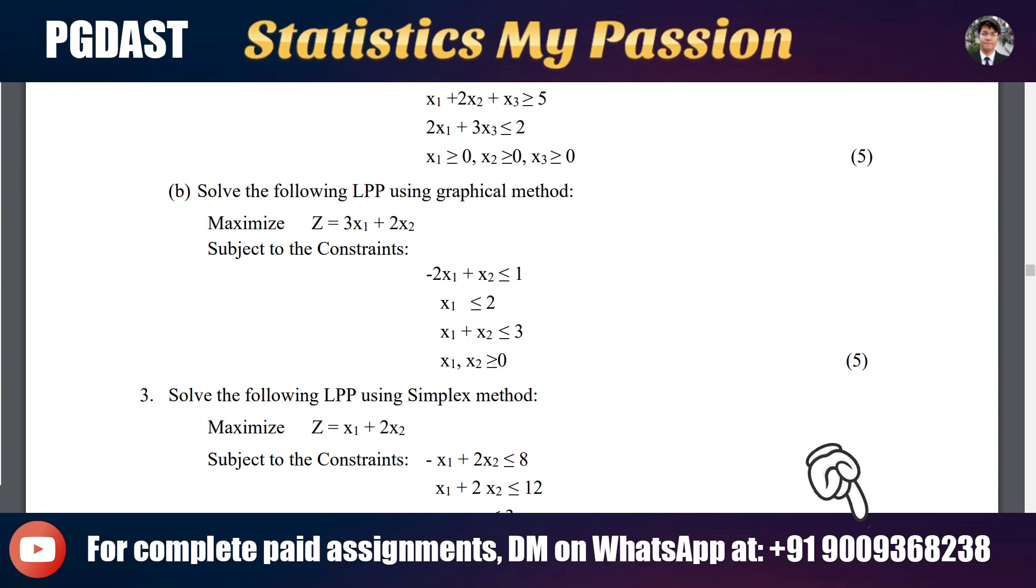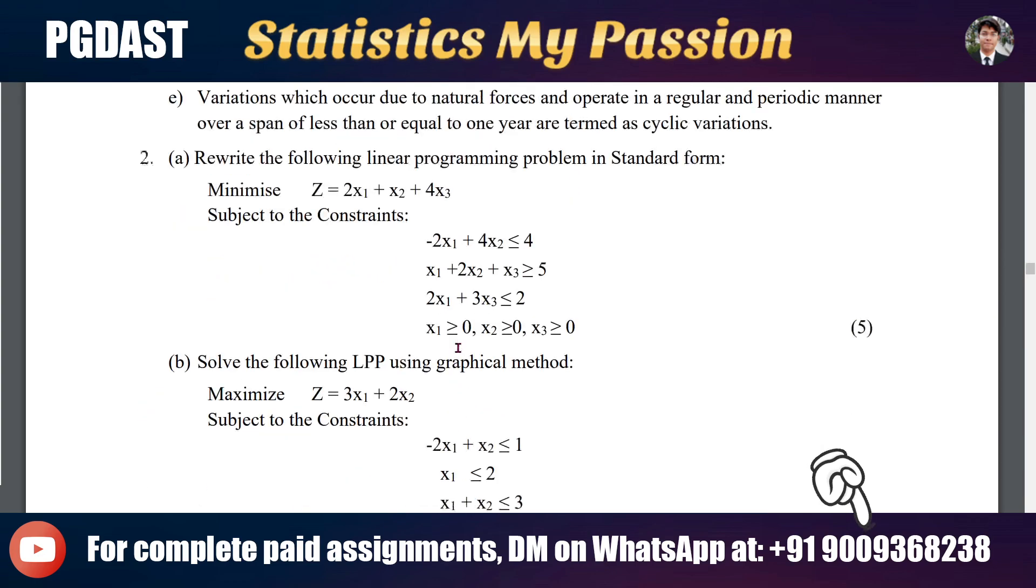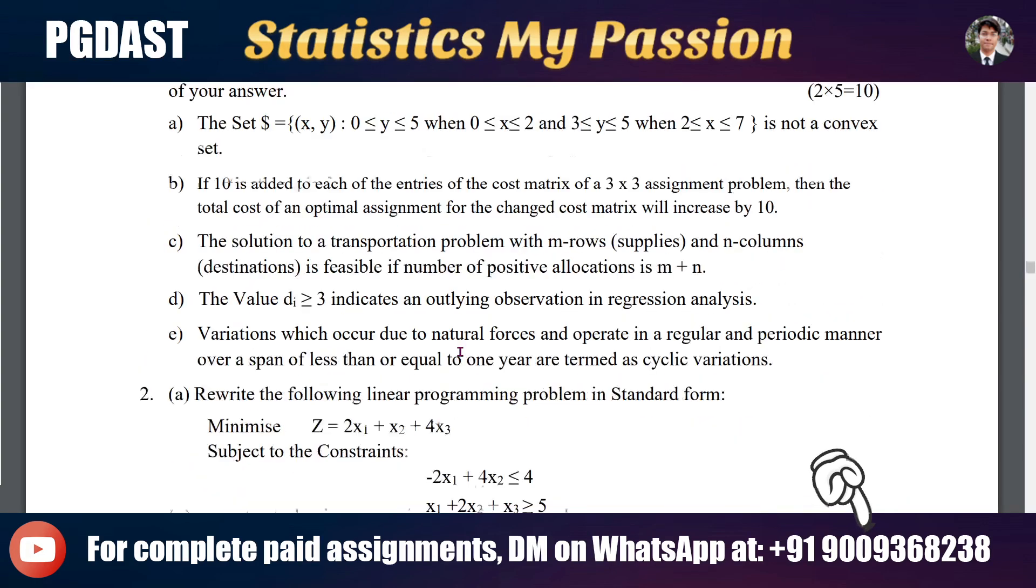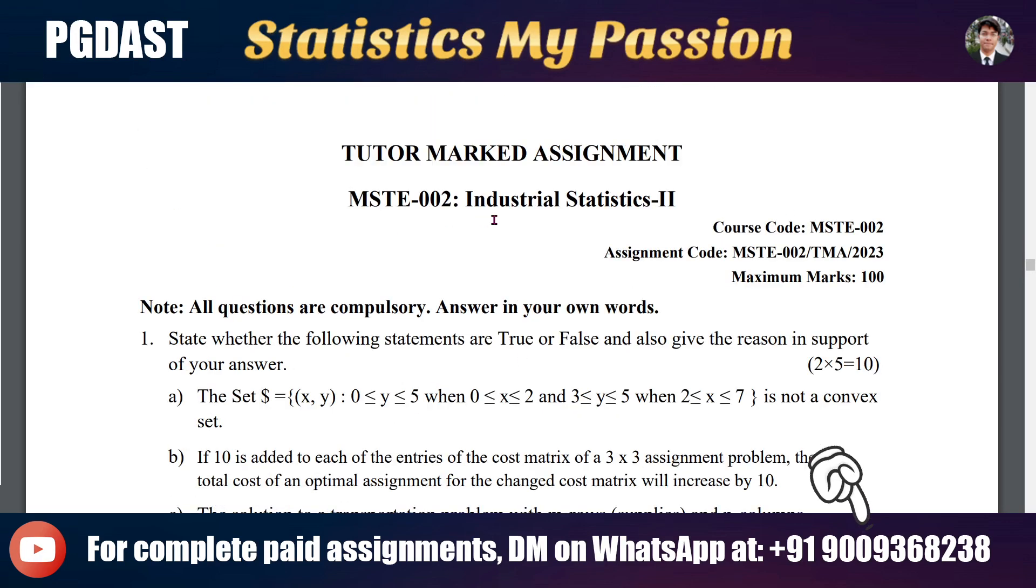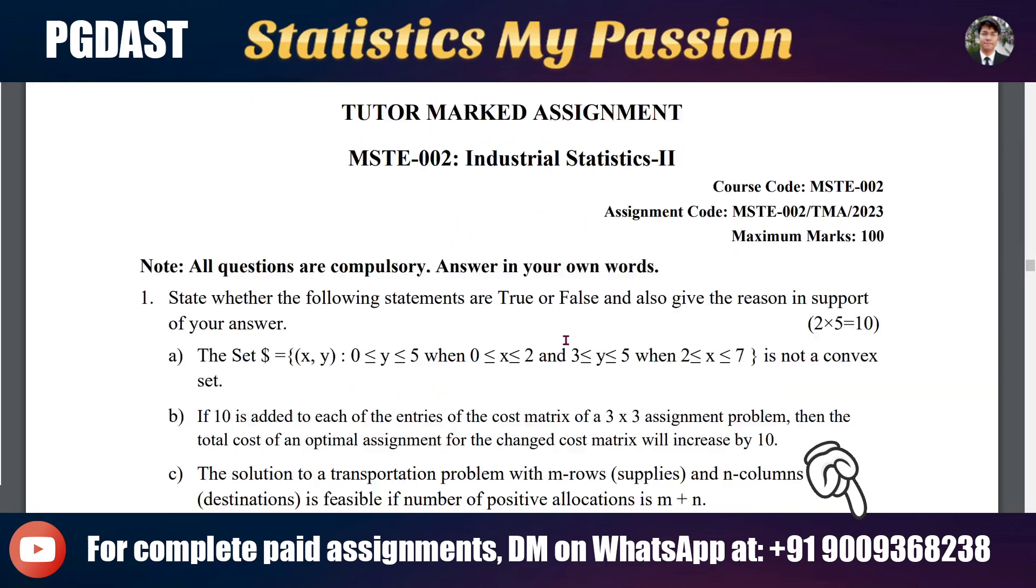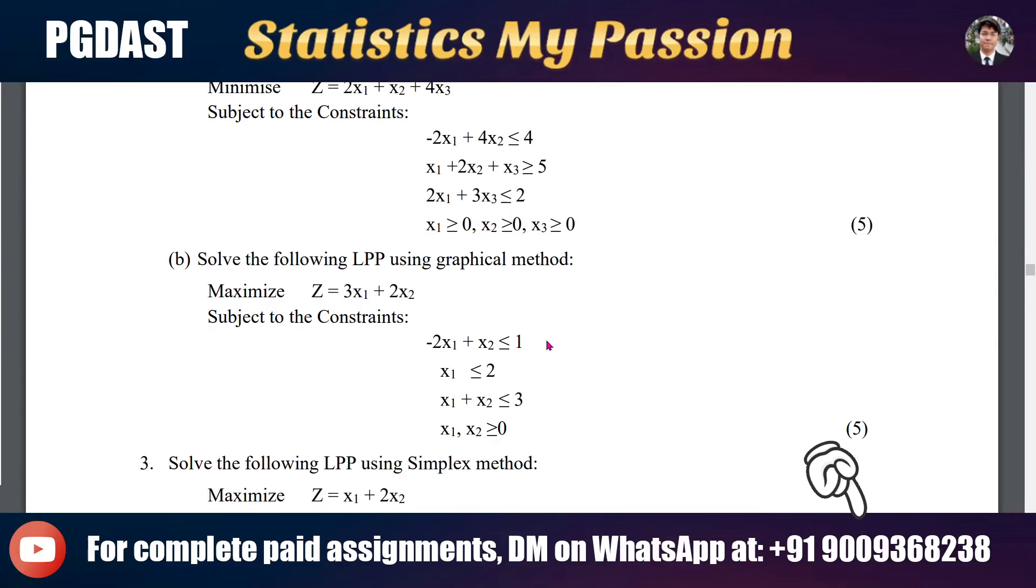For this, we were discussing question number 2B of Industrial Statistics 2MSTE-002. The question was: solve the following LPP using graphical method. Maximize Z = 3x1 + 2x2, subject to the constraints. We have 3 equations here and x1, x2 is greater than or equal to 0.